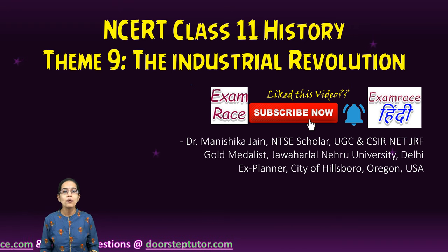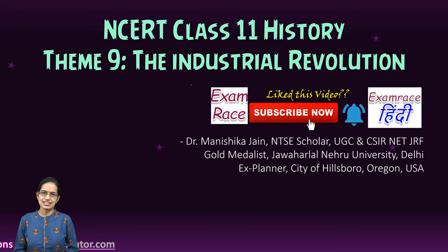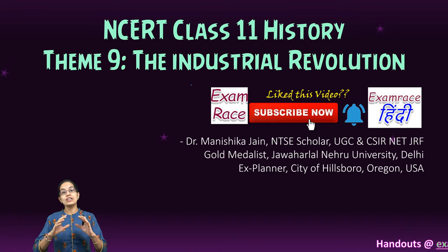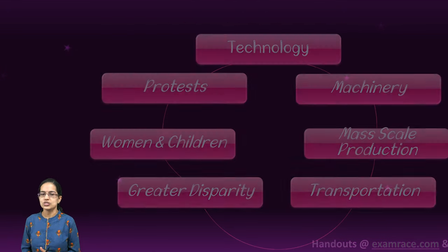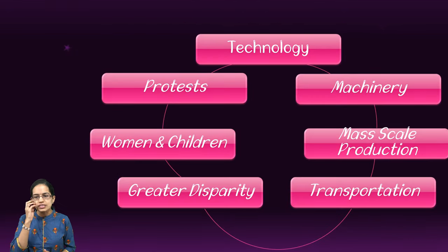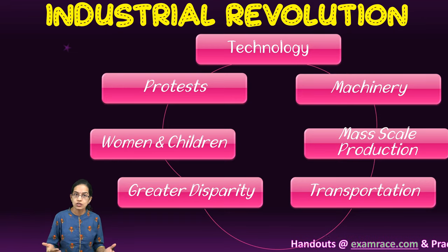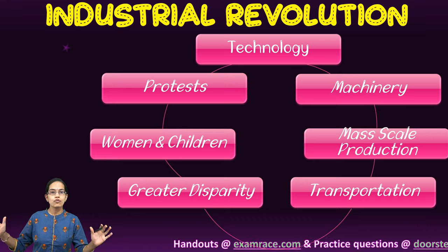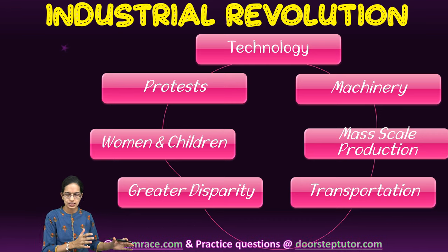Industrial Revolution: how it all began. Let's start with this journey. Understanding how and what were the key factors when we talk about the Industrial Revolution. The first important thing was technology. It was technology that changed the scenario from an agricultural revolution to an industrial revolution.